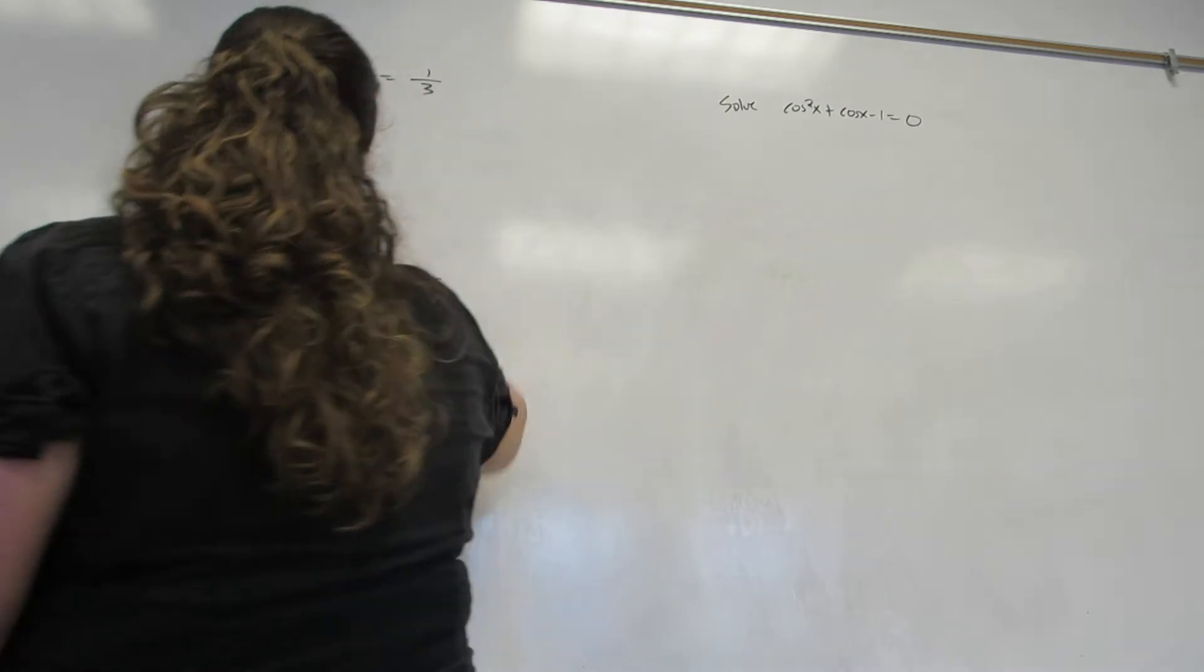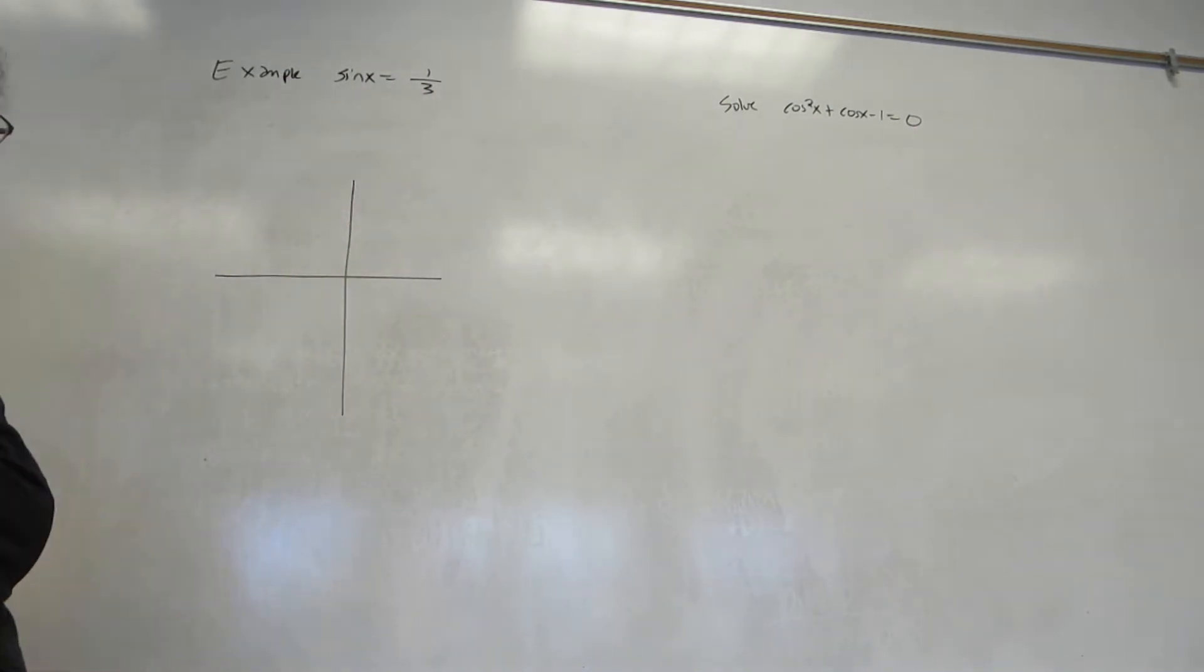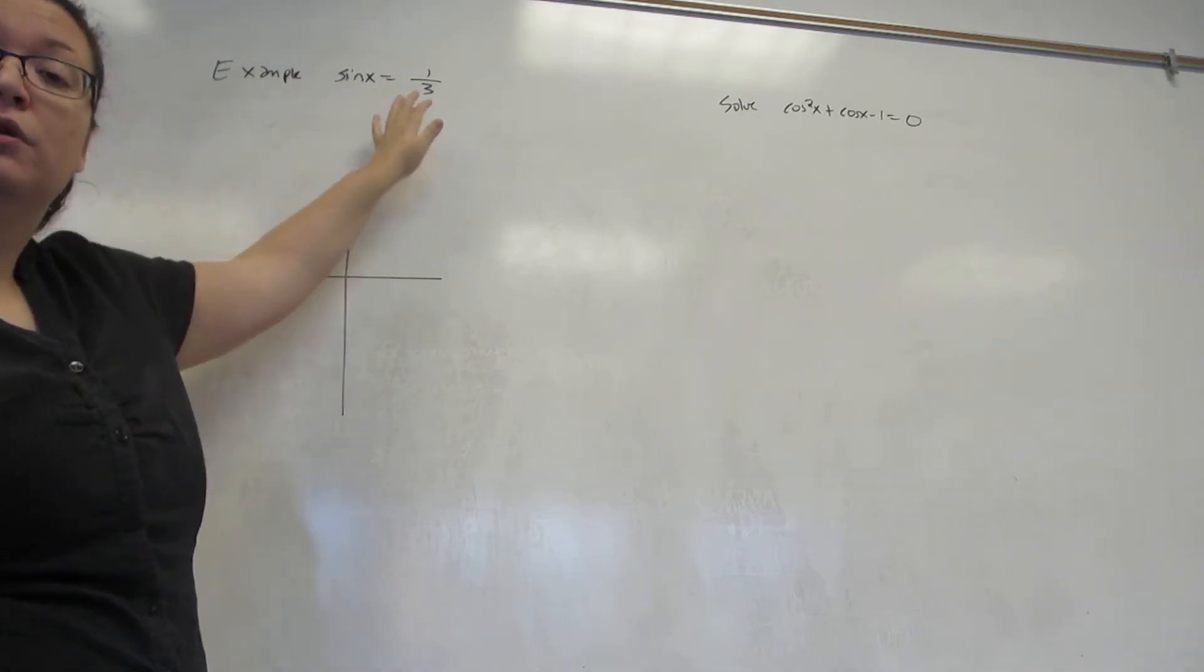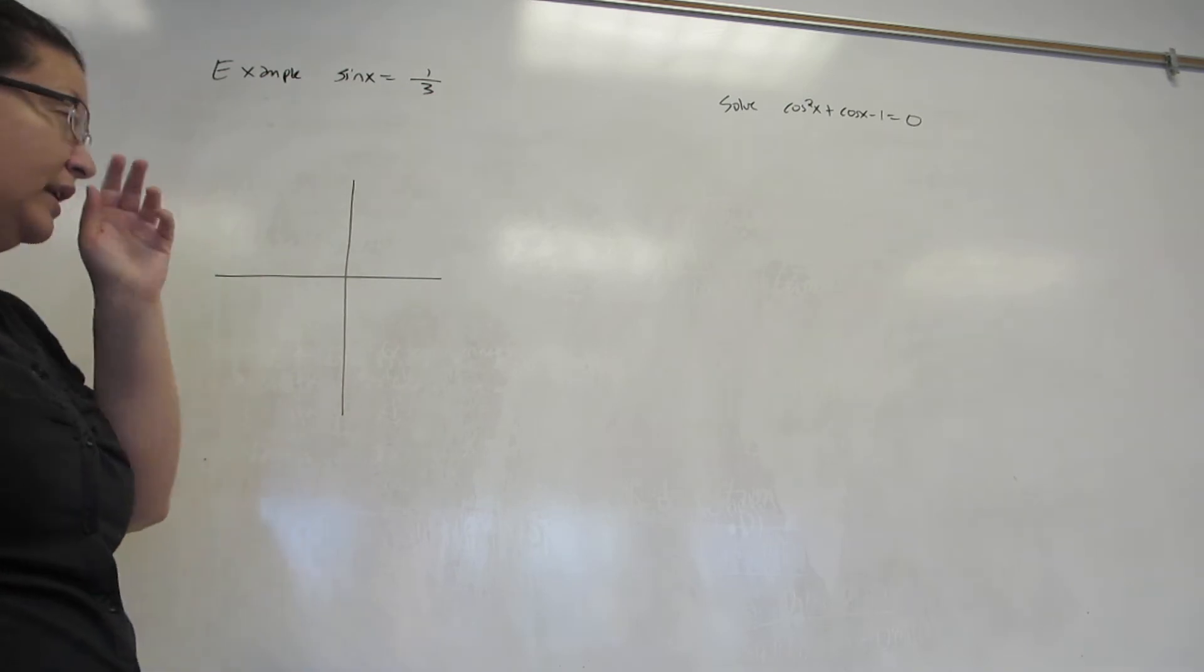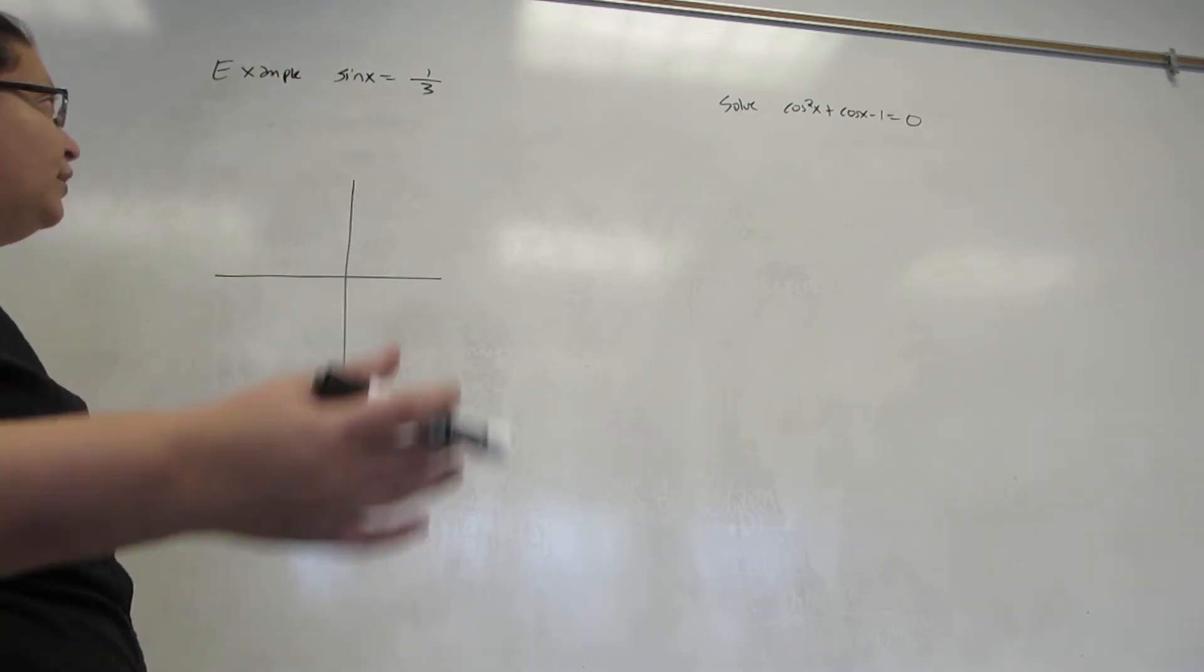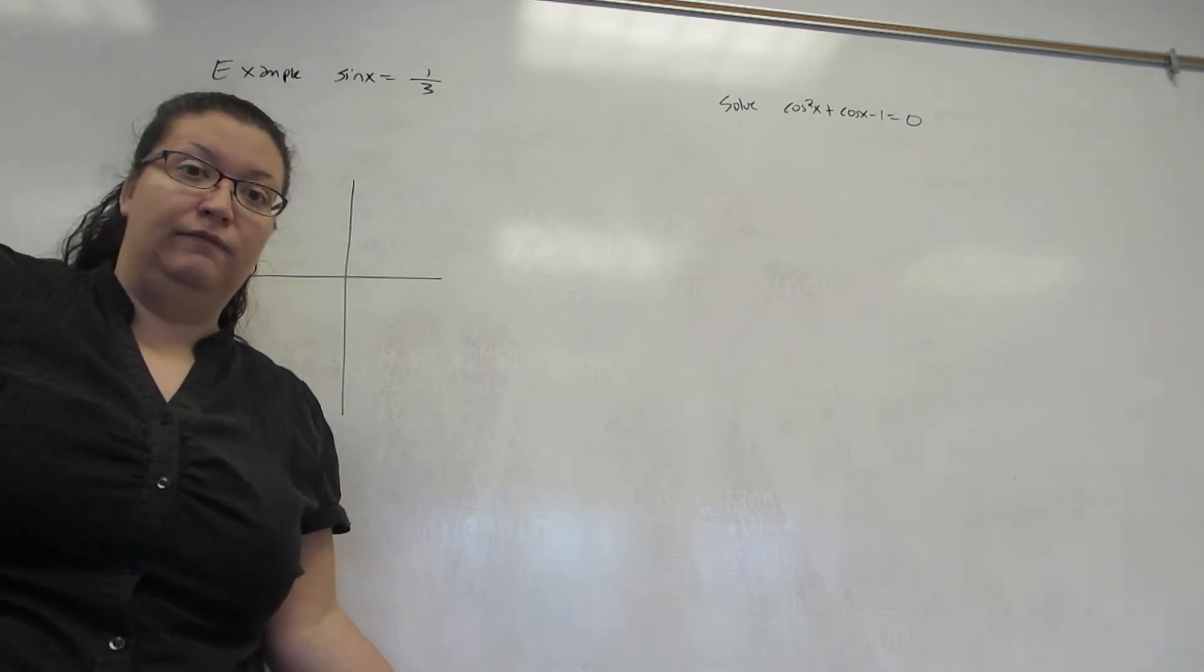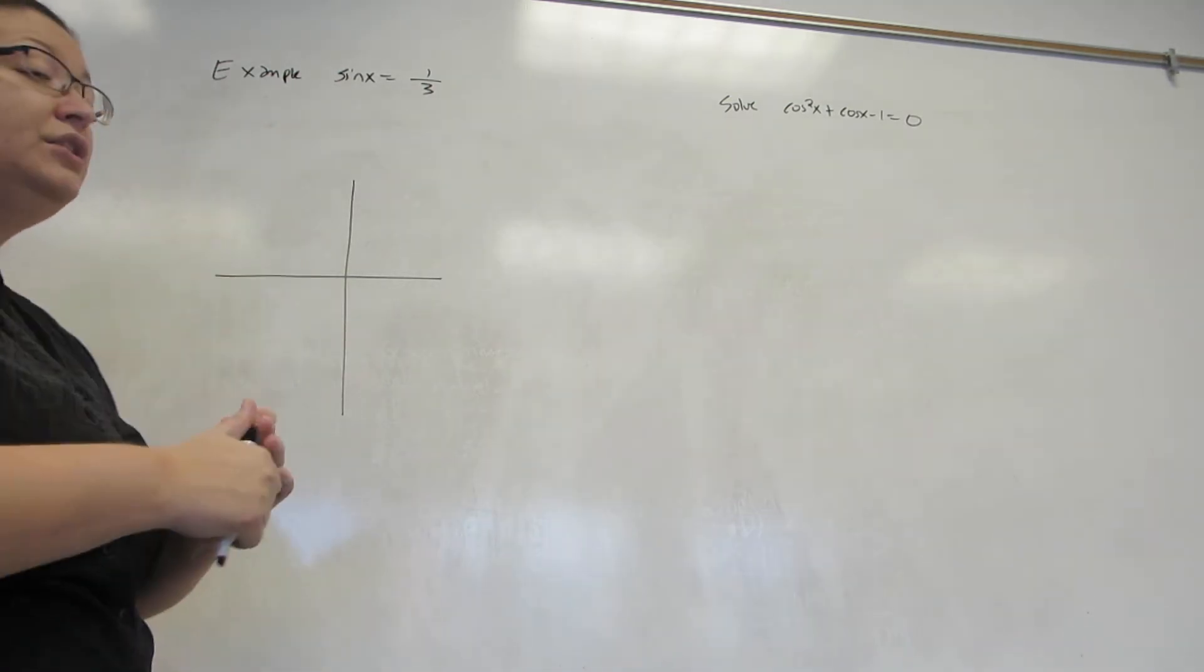As an example, we're going to start by solving sine of x equals one-third. Just like with unit circle values, the first step is always to get the single trig function equal to some number. So I've already done that. But now, if I try to write down all the places on the unit circle that have a sine value of one-third, there aren't any.